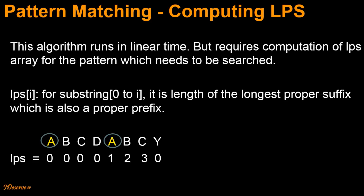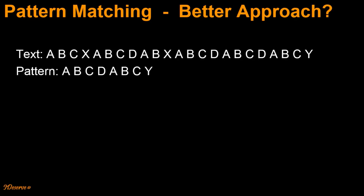The computation of this LPS array also takes linear time. You can watch my previous video which covers this LPS computation part. With LPS computation being complete, let's now look at the main KMP algorithm. We will try to understand this KMP algorithm using a couple of examples. Say we have to find the pattern 'abcdabcy' in the given text.